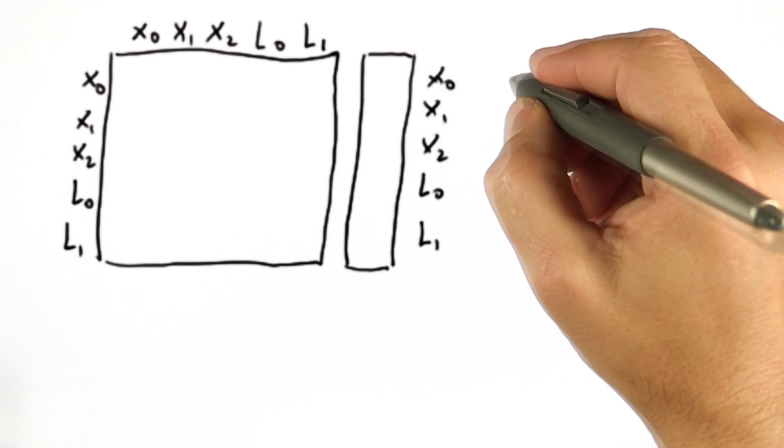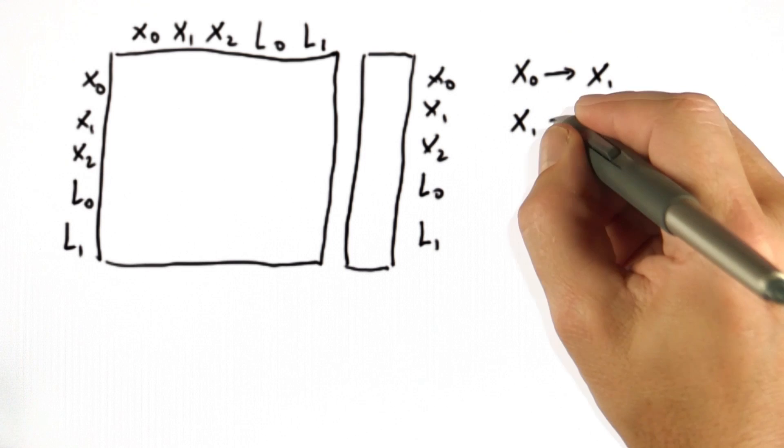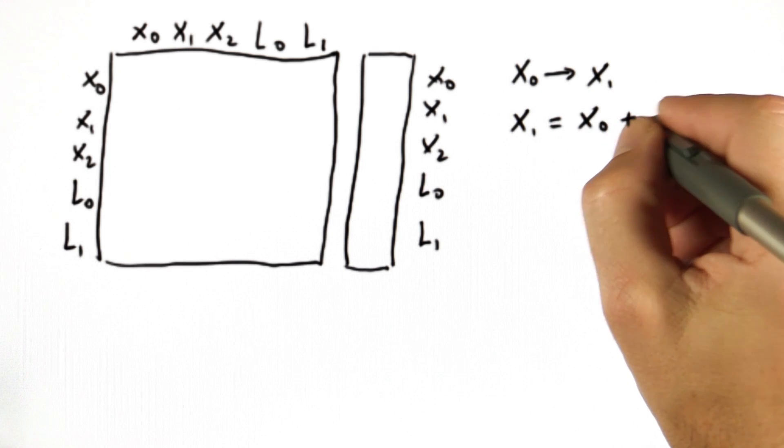So for example, if the robot moves from x0 to x1, and we therefore believe x1 should be the same as x0, say, plus 5.